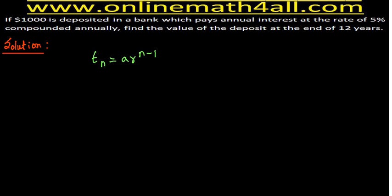In geometric sequence, A stands for the first term. But when we do compound interest problems using geometric sequence, A stands for the initial deposit or principal amount for the first year. In our problem, the value of A is $1000, because $1000 is deposited — so the principal for the first year is $1000.